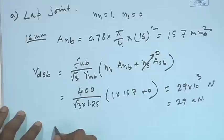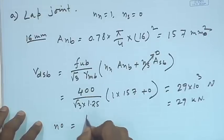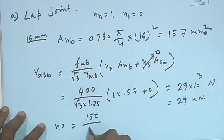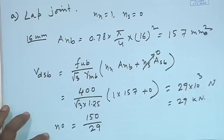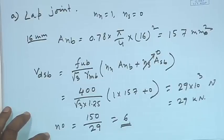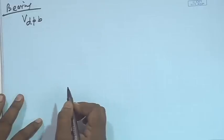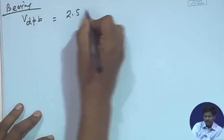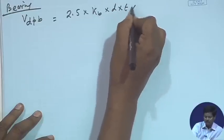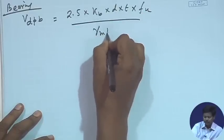Since the factored load is 150 kilo Newton and the bolt shear strength is 29 kilo Newton, the number of bolts required from shear is 150 / 29 ≈ 6 bolts. Now we check the bearing strength.